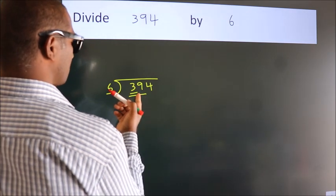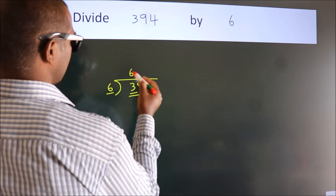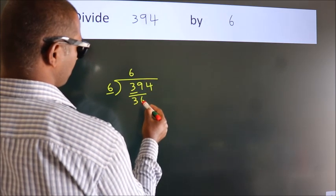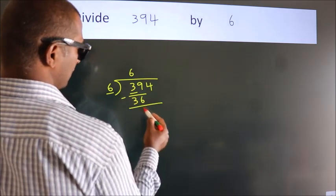A number close to 39 in the sixth table is 6×6=36. Now we should subtract, we get 3.